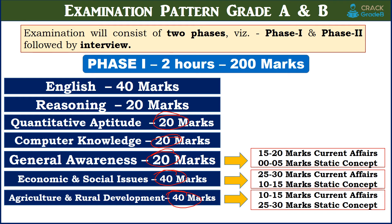In the general awareness paper, 15 to 20 marks would be from current affairs and the rest are from the static portion. In economic and social issues, 20 to 30 marks would be from current affairs and 10 to 15 marks from static portion. In agriculture and rural development, out of 40 marks, 10 to 15 marks would be current affairs and 20 to 30 marks from the static portion. This Phase 1 pattern is the same for both Grade A and Grade B.